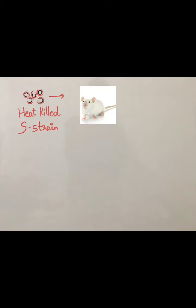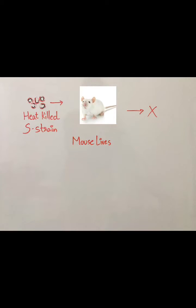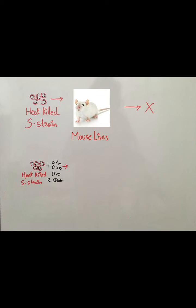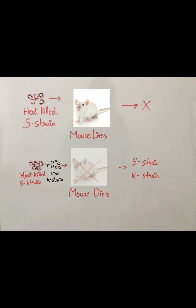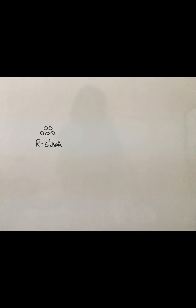When he injected heat-killed S-strain cells, the mouse survived. He then combined live R-cells along with heat-killed S-strain and injected it into the mouse. The mouse died, and he later extracted both live S-strain and R-strain from the dead mouse.